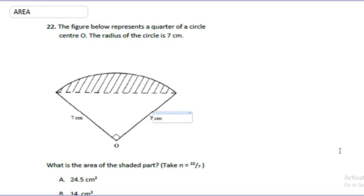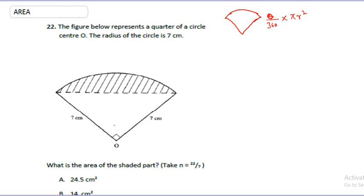The first question says the figure below represents a quarter of a circle with center O. The radius of the circle is 7 cm. The question asks: what is the area of the shaded part? This full shape is called a sector. The area of a sector is given as theta over 360 times pi r squared, where theta is the angle.